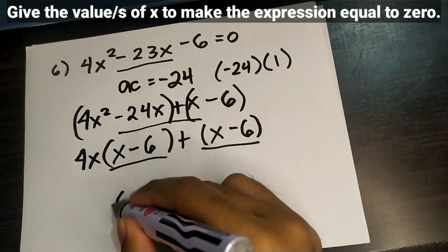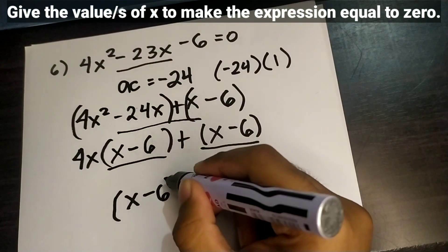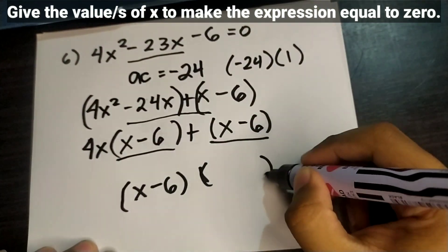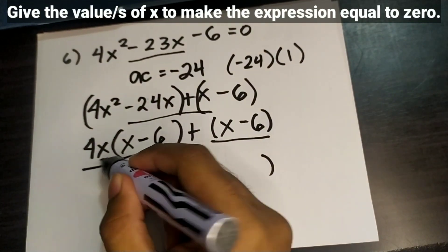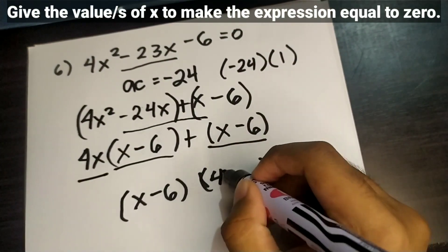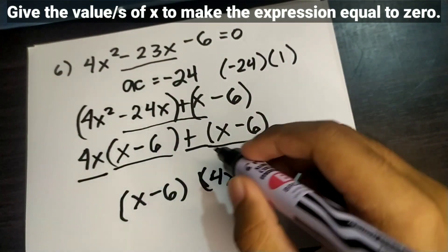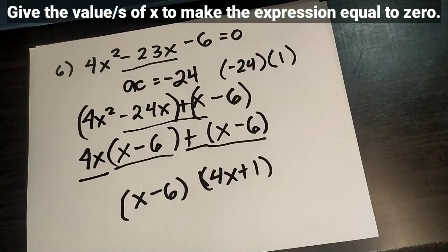Now factor out the common binomial (x minus 6). So the factored form is (x minus 6)(4x plus 1). We have now found the factors of 4x squared minus 23x minus 6.